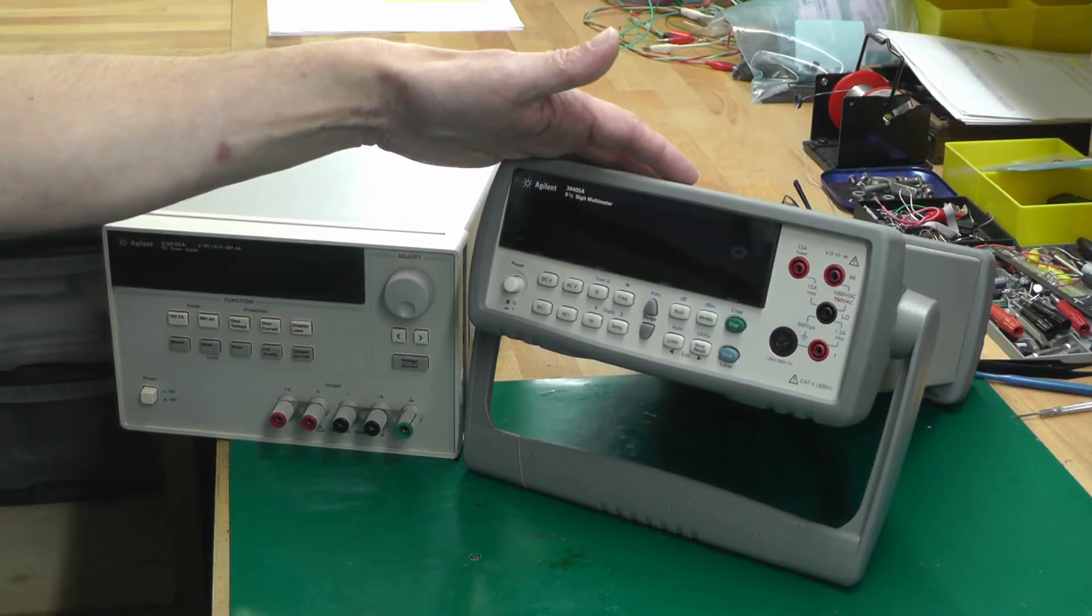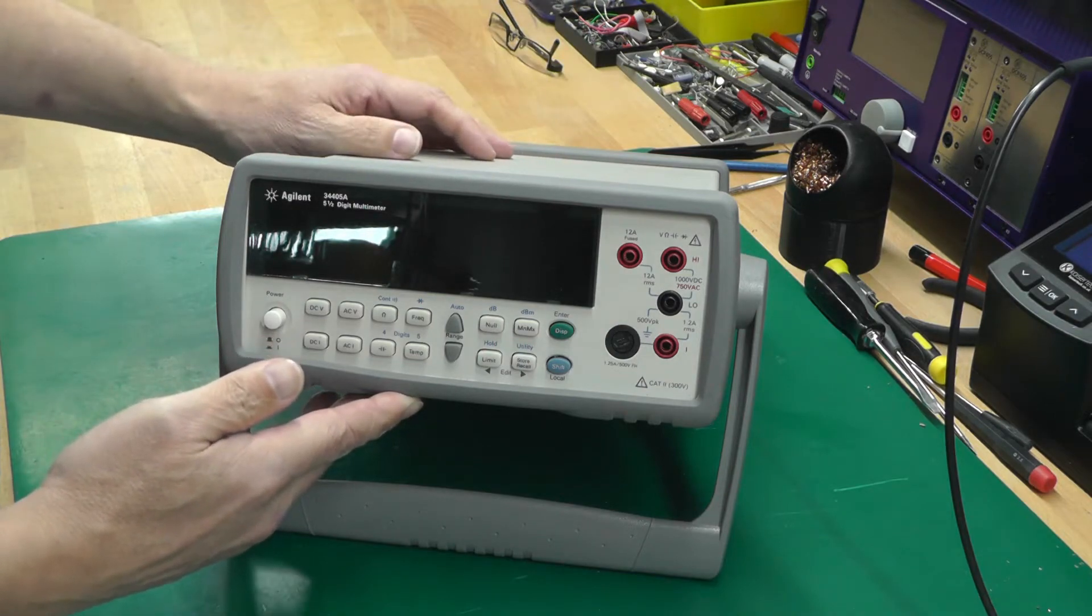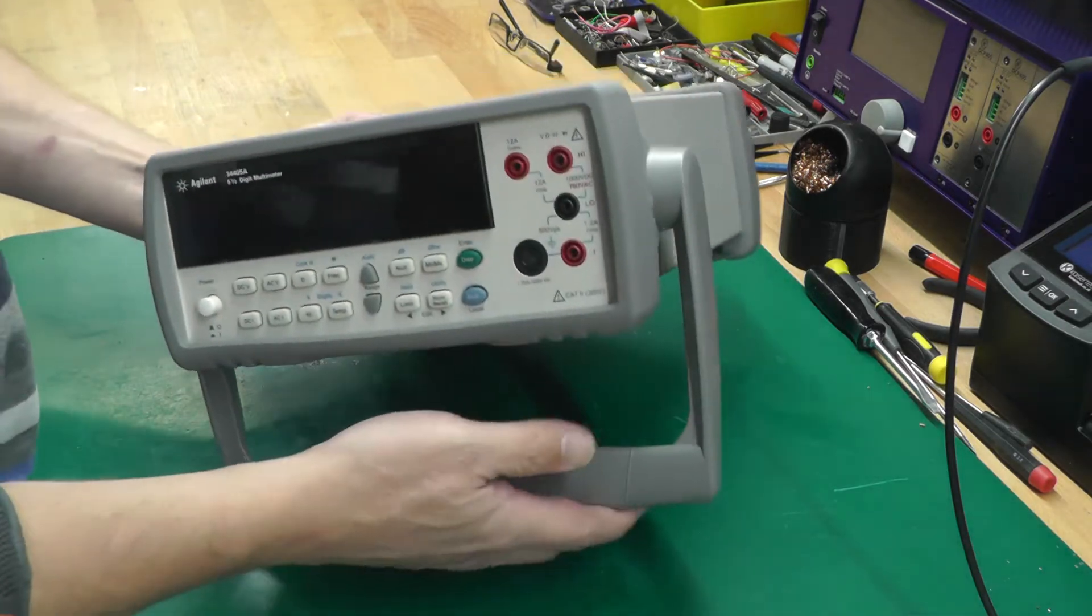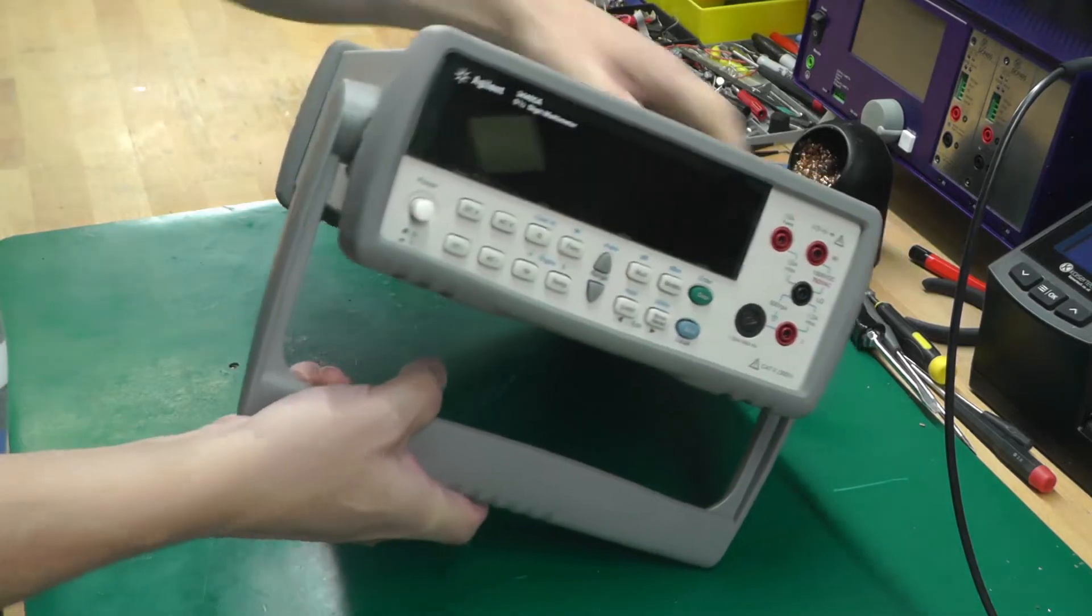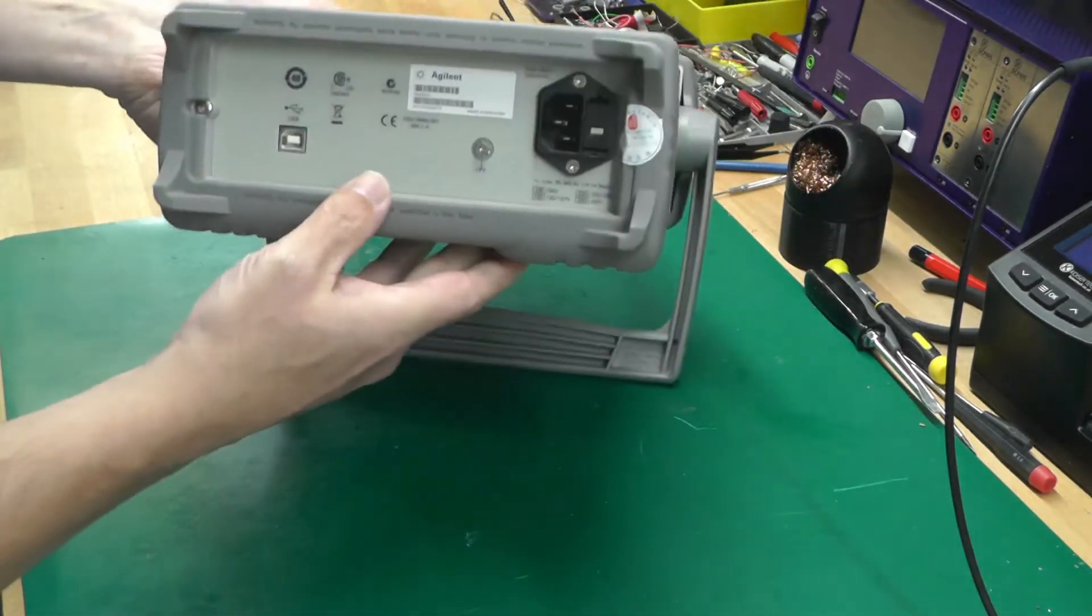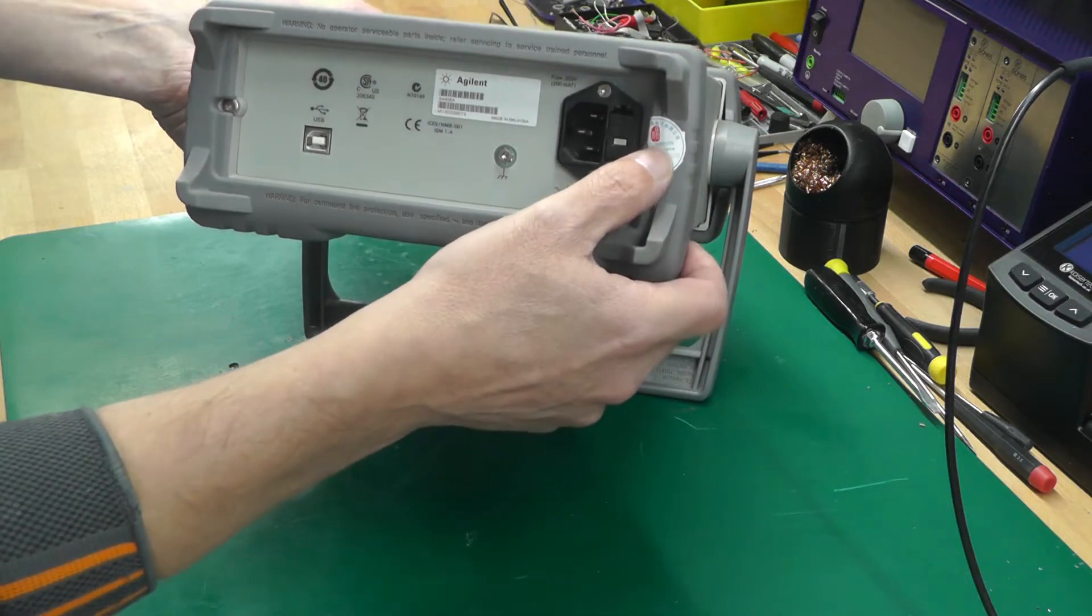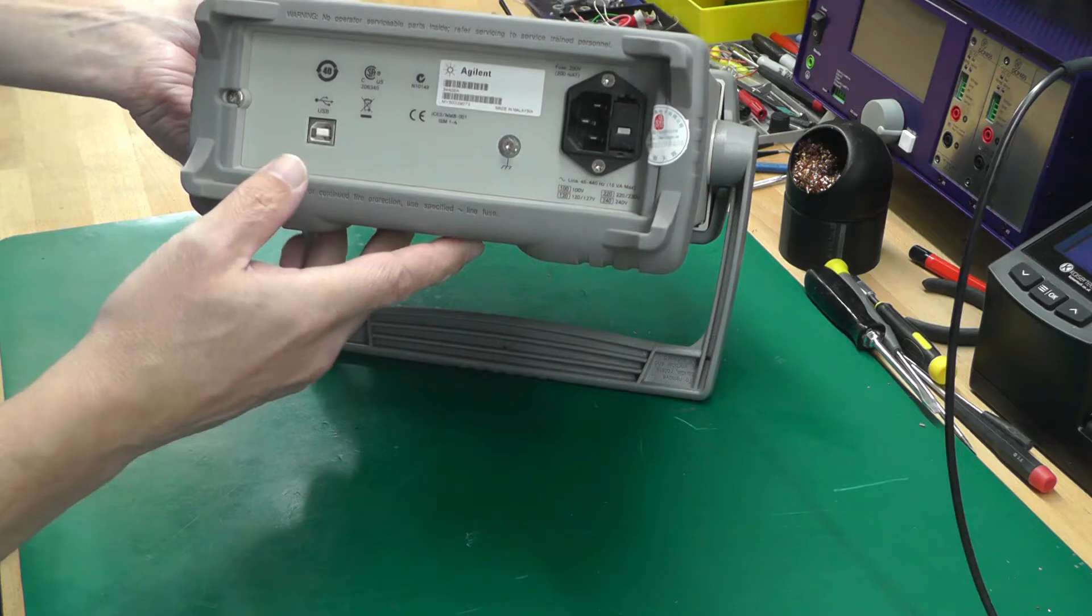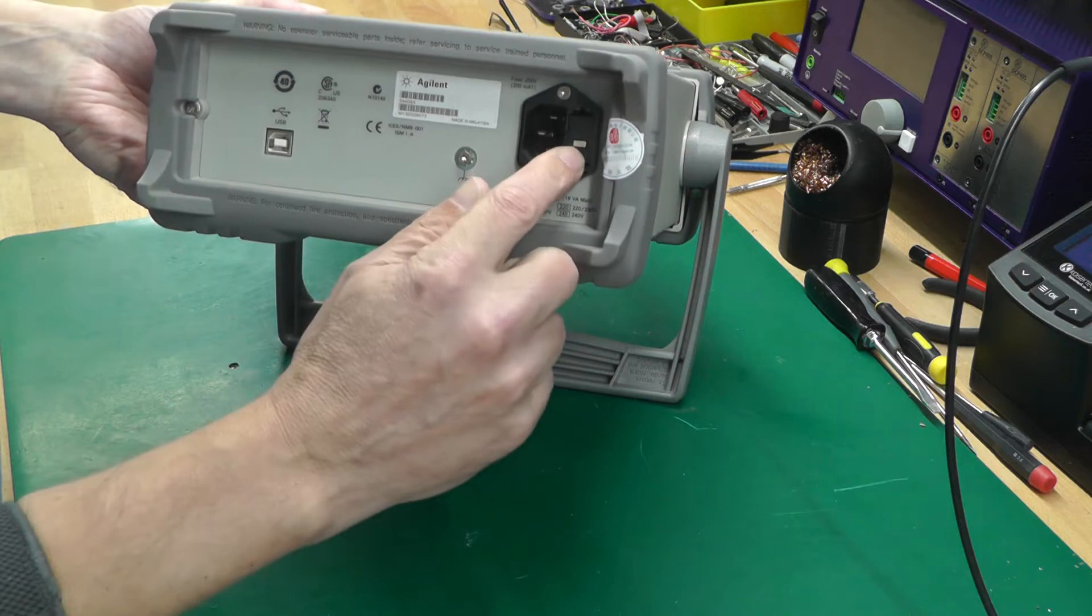So here's the 34405A Agilent five and a half digit multimeter. It's in really good condition, to tell you the truth. There's no dings and no bangs on it, everything's intact around at the back as well. It's got a seal on it, but I think everything I get from this company has the same type of seal, so it's probably their own. I think the first thing I'll do is reset the line selector.